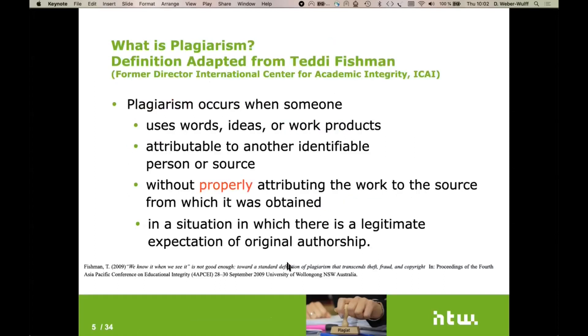So I've seen a lot of attempts to define it in English, but a lot of them seem to be sort of this 'we know it when we see it.' And that's not very precise. So I'd like to propagate a definition that I have adapted from Teddy Fishman. She was the director of the International Center for Academic Integrity at Duke for many years. And she's put this idea forward in 2009. And I've adapted it a bit: plagiarism occurs when someone uses words, ideas, or work products that are attributable to another identifiable person or source without properly attributing the work to the source from which it was obtained in a situation in which there is a legitimate expectation of original authorship. I'm of the opinion the plagiarism is plagiarism, even if you don't profit from it.